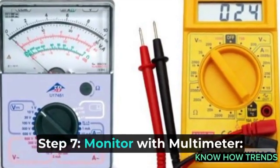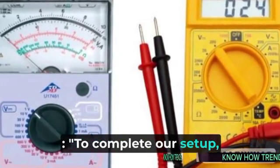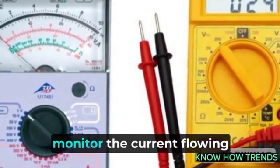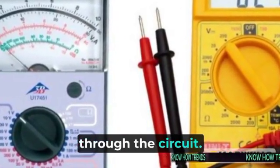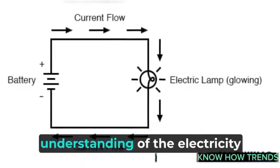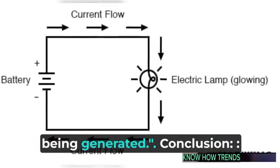Step 7: Monitor with multimeter. To complete our setup, you can use a multimeter to monitor the current flowing through the circuit. This will give you a better understanding of the electricity being generated.